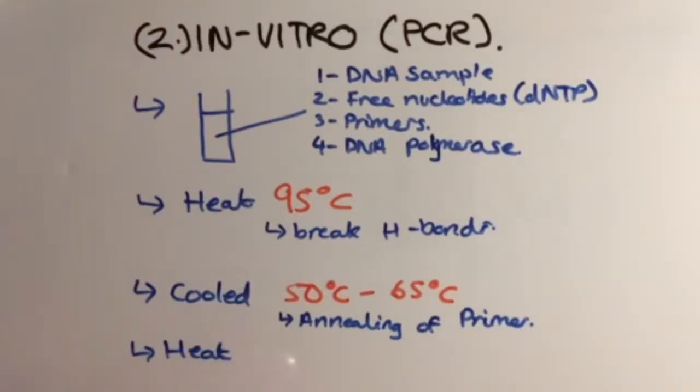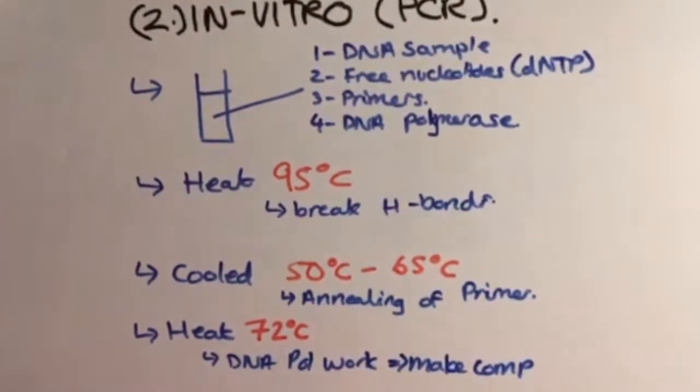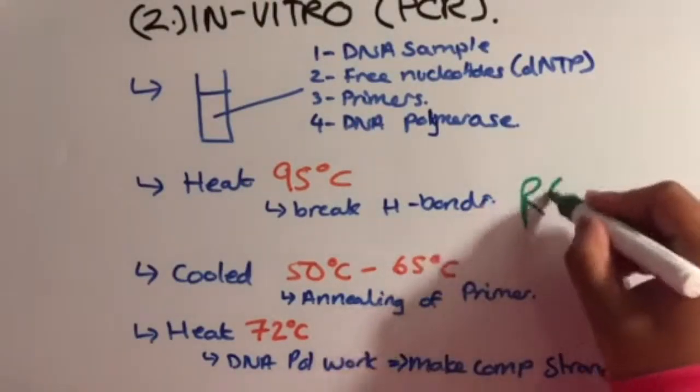Then the mixture is heated to 72 degrees Celsius so that DNA polymerase can work. The DNA polymerase lines up free dNTPs alongside each template strand, and base pairing occurs, meaning complementary strands are formed.